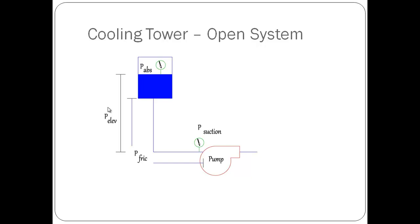The third term: P friction. The friction pressure head is the amount of pressure lost due to friction in the piping, fittings, equipment, valves, etc., leading from the fluid source to the pump.